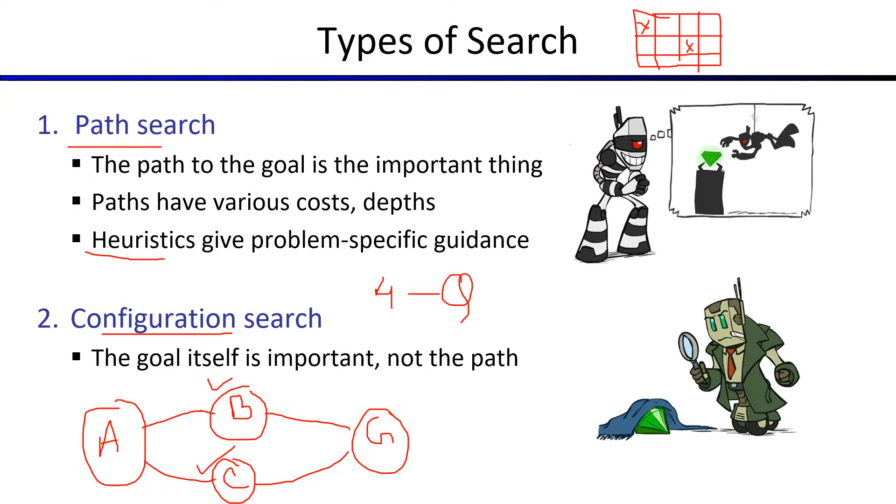Similarly, another example is shown here. A thief wants to steal a diamond, so he is searching for a path that he can use to reach the diamond. Now, let's assume he has stolen the diamond.